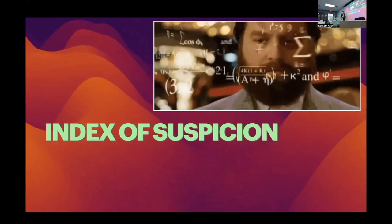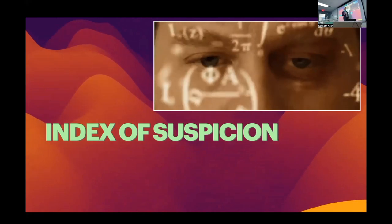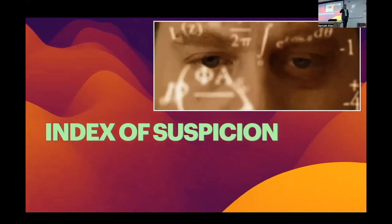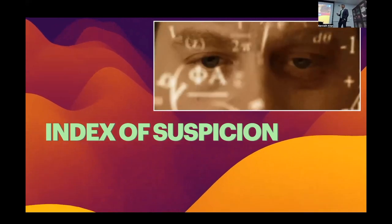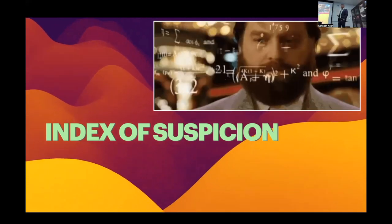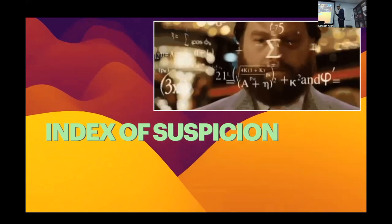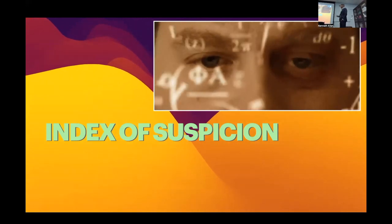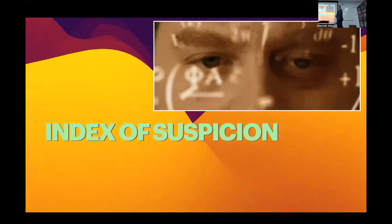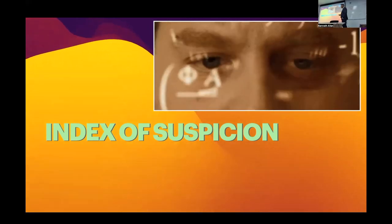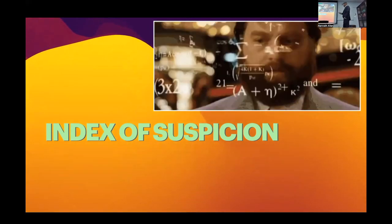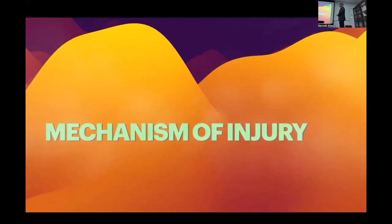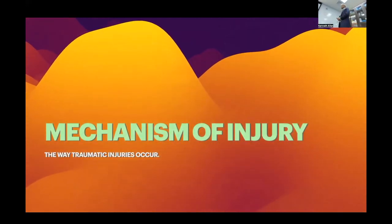We're looking for what is called the index of suspicion — a mental rolodex of everything we've seen in the past. Based on the patient's signs and symptoms, what the cars look like, what the scene looks like: what evidence indicates this is not a big trauma, or that we need to be looking for underlying problems? That's index of suspicion — looking for potential hazards and mechanism of injury, the way in which traumas occur.